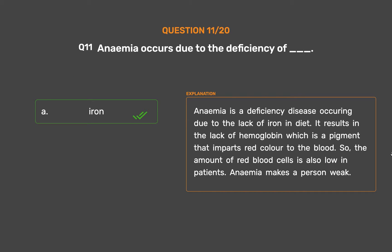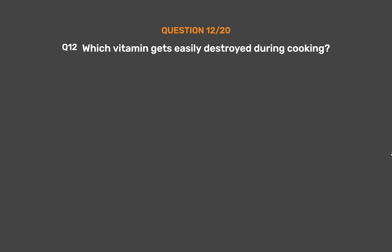Anemia is a deficiency disease occurring due to the lack of iron in the diet. It results in the lack of hemoglobin, which is a pigment that imparts red color to the blood. The amount of red blood cells is also low in patients. Anemia makes a person weak.